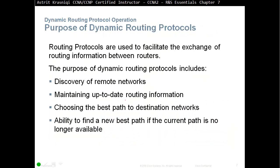The purpose of dynamic routing protocols: routing protocols are used to facilitate the exchange of routing information between routers. This includes discovery of remote networks. Directly connected networks don't need to be discovered, but you need to discover remote networks connected to different routers. Unlike static routing, which is not scalable for large networks, routing protocols maintain up-to-date routing information. If one path fails, they will pick another path, or if there is a new path, they will tell the neighbors.